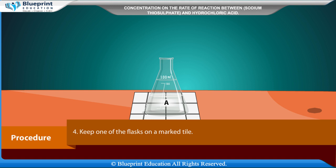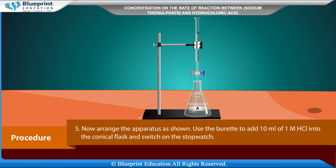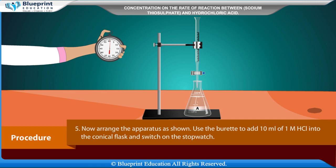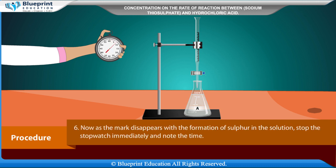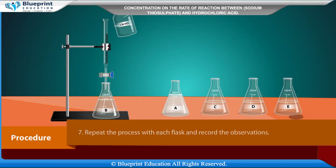Keep one of the flasks on a marked tile. Now arrange the apparatus as shown. Use the burette to add 10 ml of 1 M HCl into the conical flask and switch on the stopwatch. As the mark disappears with the formation of sulphur in the solution, stop the stopwatch immediately and note the time. Repeat the process with each flask and record the observations.